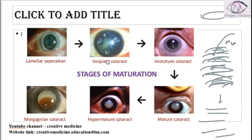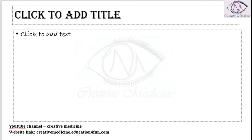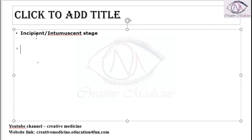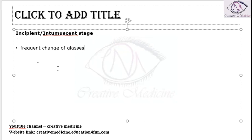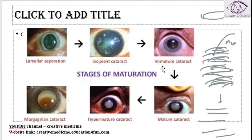Second, we have incipient cataract, which is the initial form of cataract, also called the intumescent stage. In the incipient or intumescent stage, the patient will present with frequent changes of glasses, and even colored halos are seen.